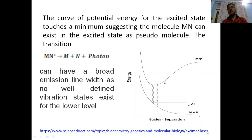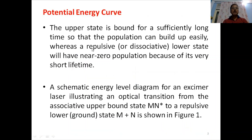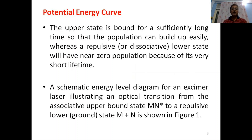In the excited state there is a minimum in the potential energy, so MN star can stay there for some time, giving a chance of making a population inversion in MN star. The upper state is bound for a sufficiently long time so that population inversion can be built up easily, whereas the repulsive or dissociative lower state will have near-zero population because of its very short lifetime.